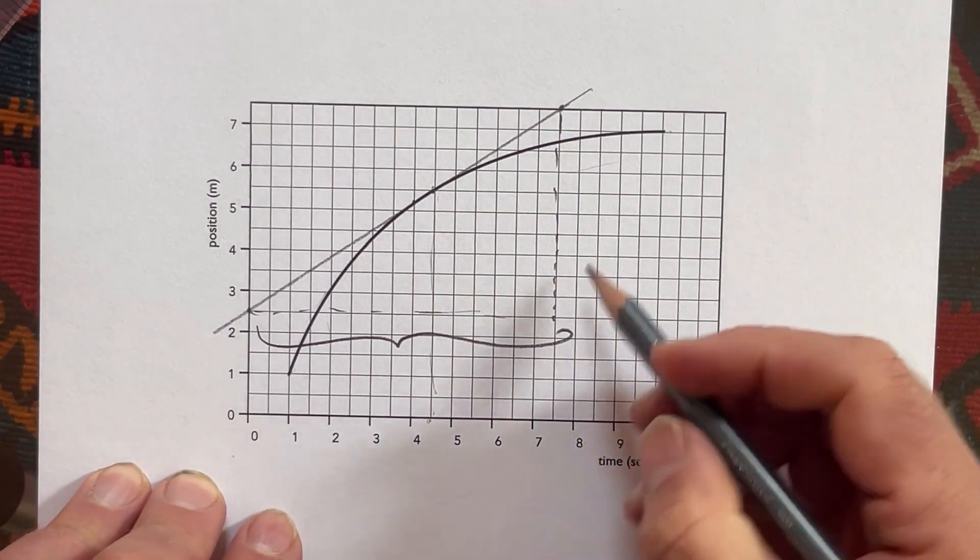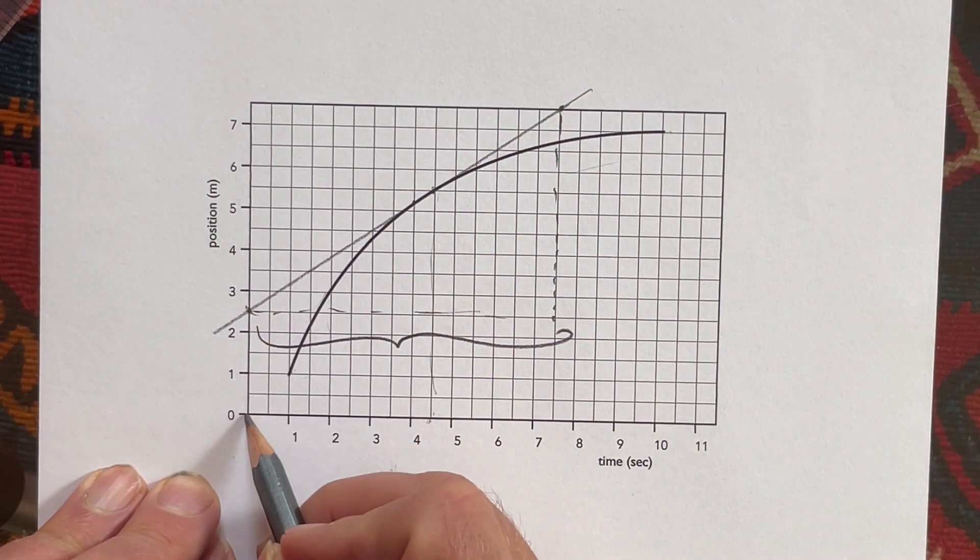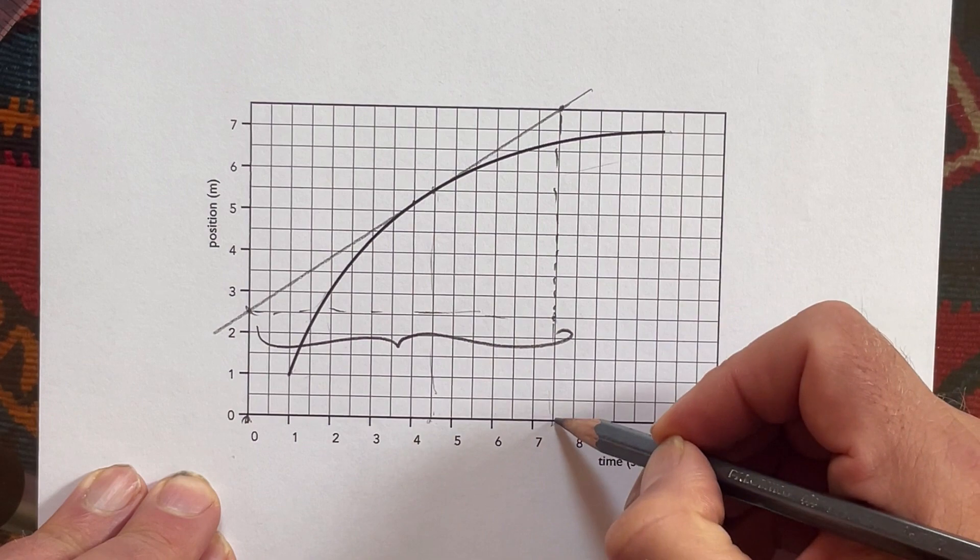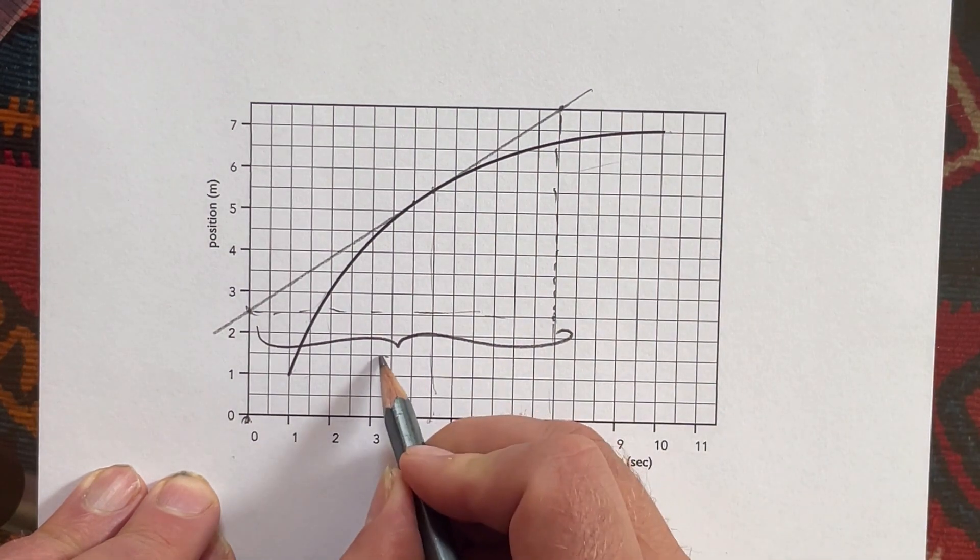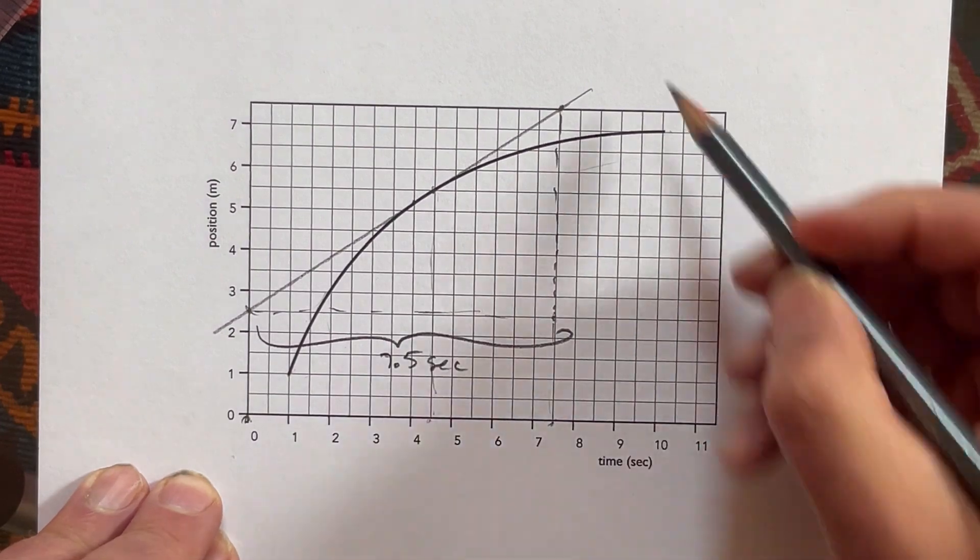Well, we go from the 0 mark, from time is 0, to time is 7.5. So I'm going to say that run is 7.5 seconds. And what's the rise?